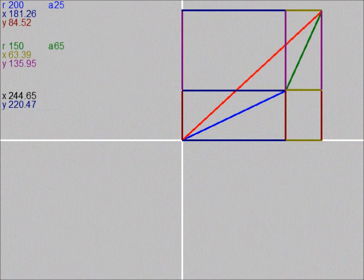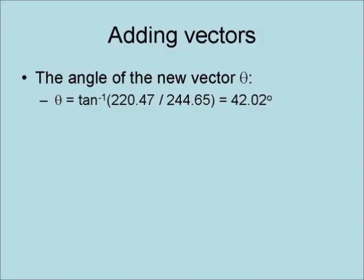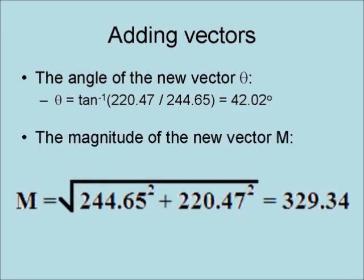This results in component vectors for our new vector that run along the x and y axes with magnitudes of 244.65 and 220.47 respectively. The angle of the new vector is theta equals the arctangent of 220.47 divided by 244.65, equaling 42.02 degrees. And the magnitude of the new vector is m equals the square root of 244.65 squared plus 220.47 squared, which equals 329.34.